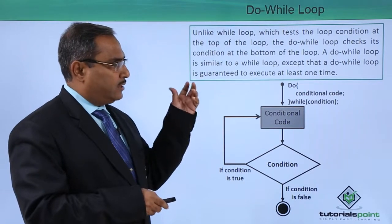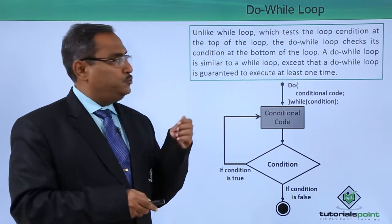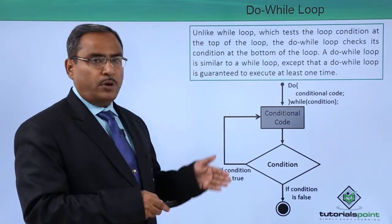Unlike the while loop which tests the loop condition at the top of the loop, in case of do-while loop it checks the condition at the bottom of the loop.